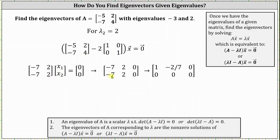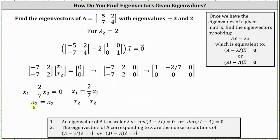Next we have the augmented matrix, and then the augmented matrix written in reduced row echelon form. Once again x2 is a free variable. The first row indicates x1 minus two-sevenths x2 equals zero. Solving the first equation for x1 we have x1 equals two-sevenths x2. Parameterizing the solution by letting x2 equal s, where s is any real number, gives us x1 equals two-sevenths s and x2 equals s.